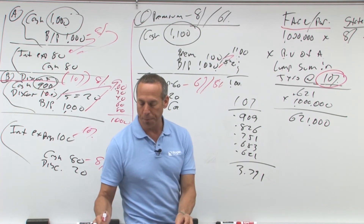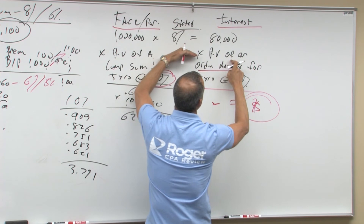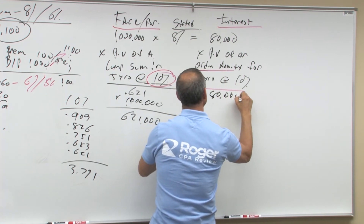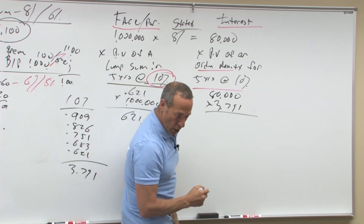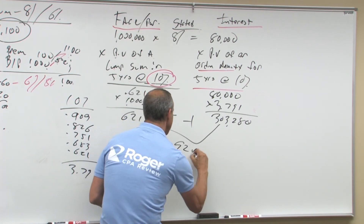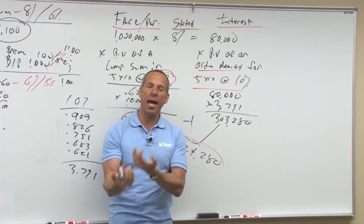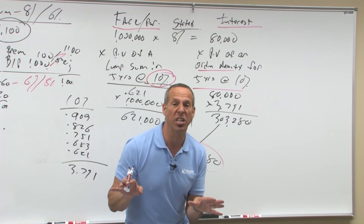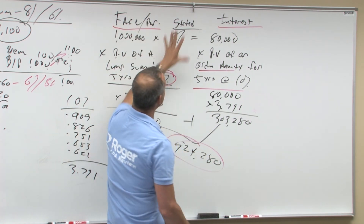So taking that 3.791 as the present value of an ordinary annuity factor, we get $80,000 times 3.791, which equals $303,280. When you add that to the $621,000 from the lump sum, you end up with $924,280. That's how much we should charge in order for you to earn 10% when the bond is paying 8%. In my earlier example I just used $900,000 for the discount example to keep it simple, but the real number would be $924,280. This is present value of a lump sum plus present value of an ordinary annuity.